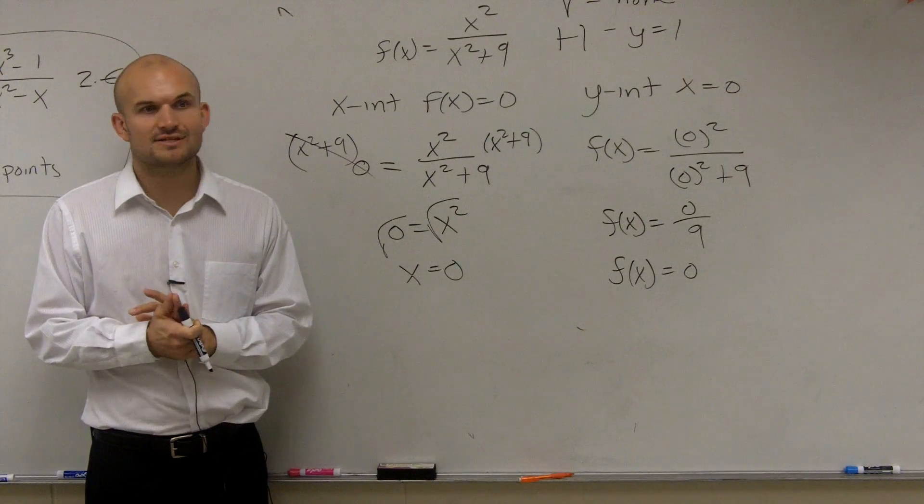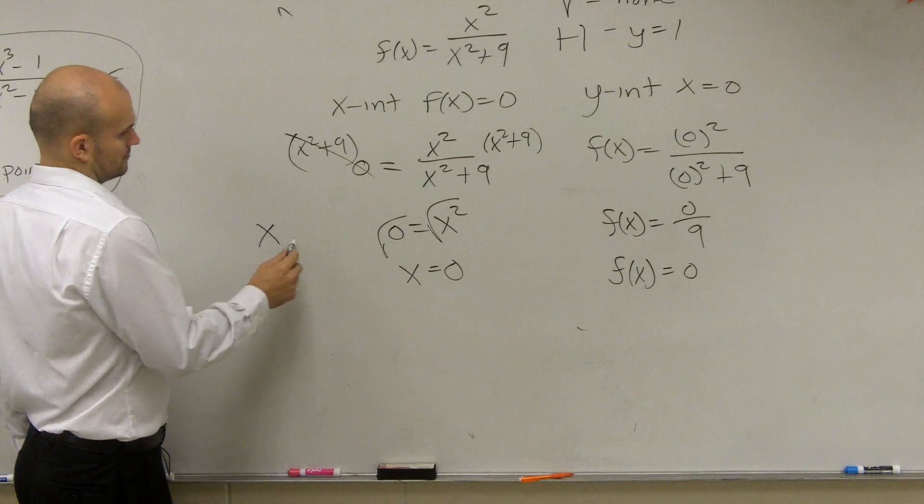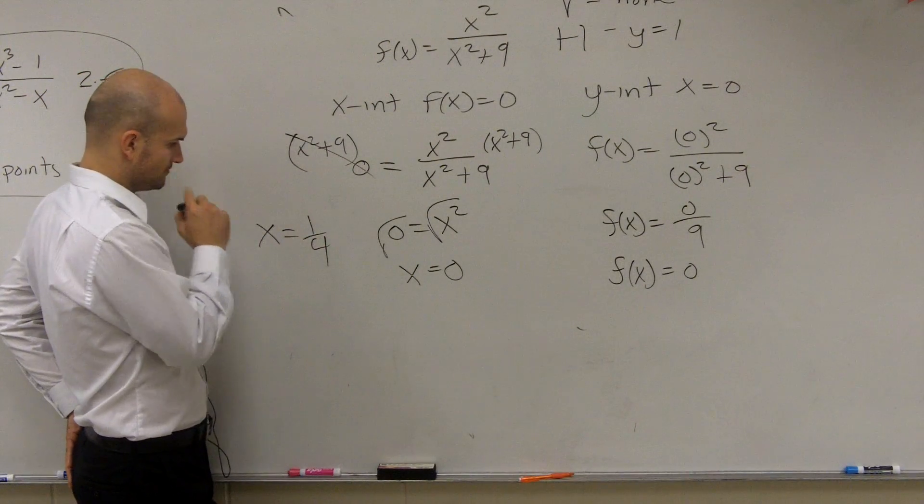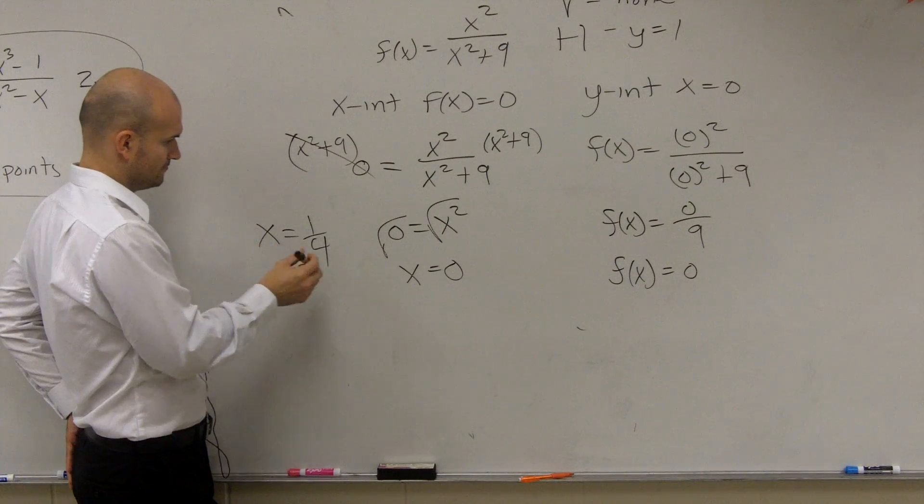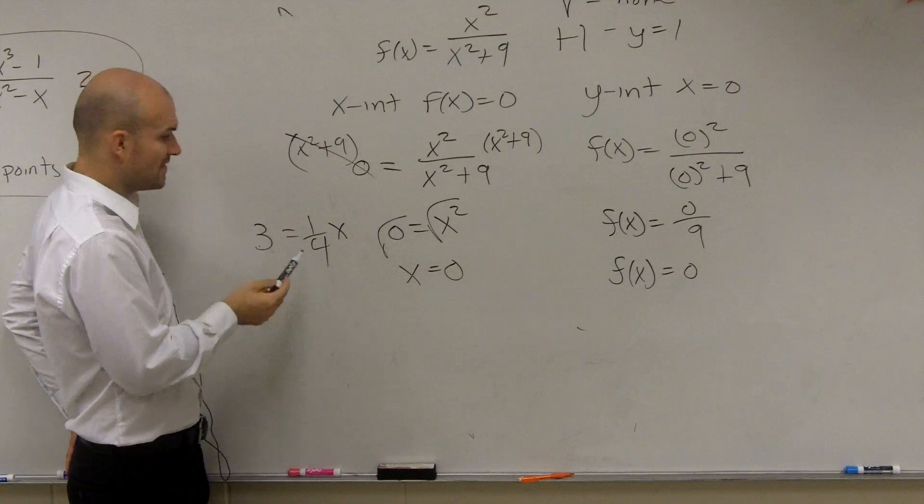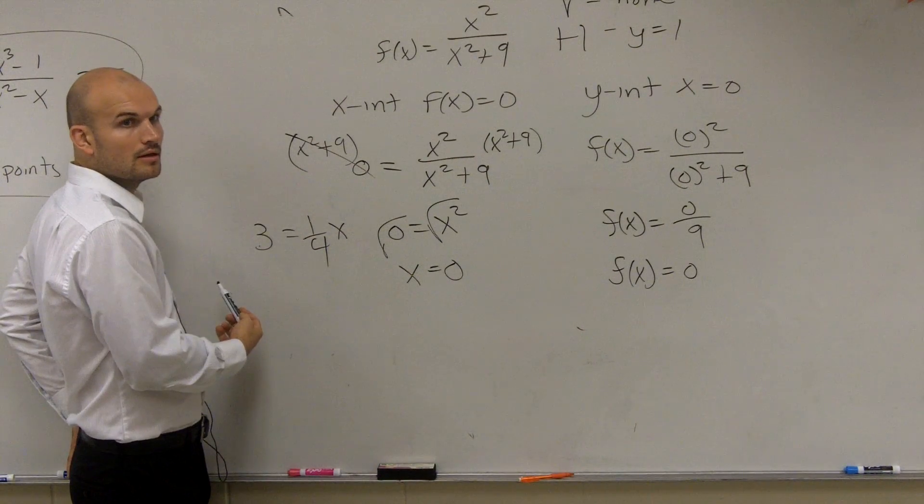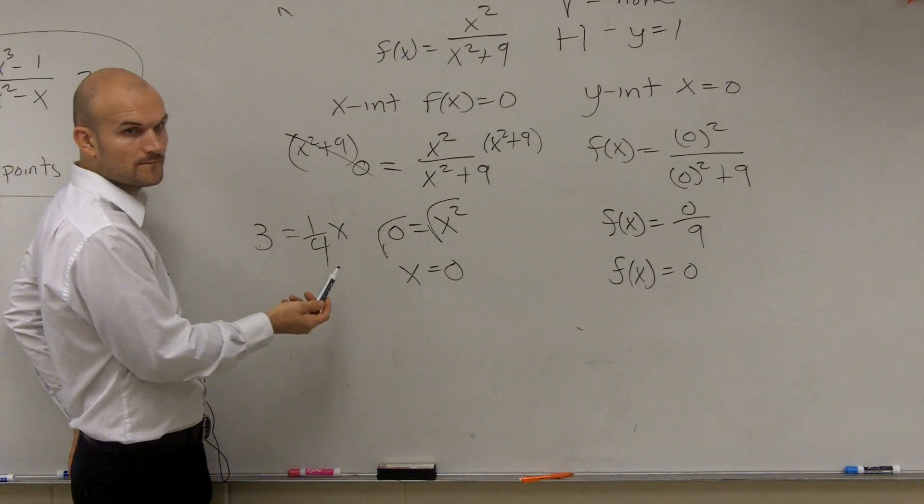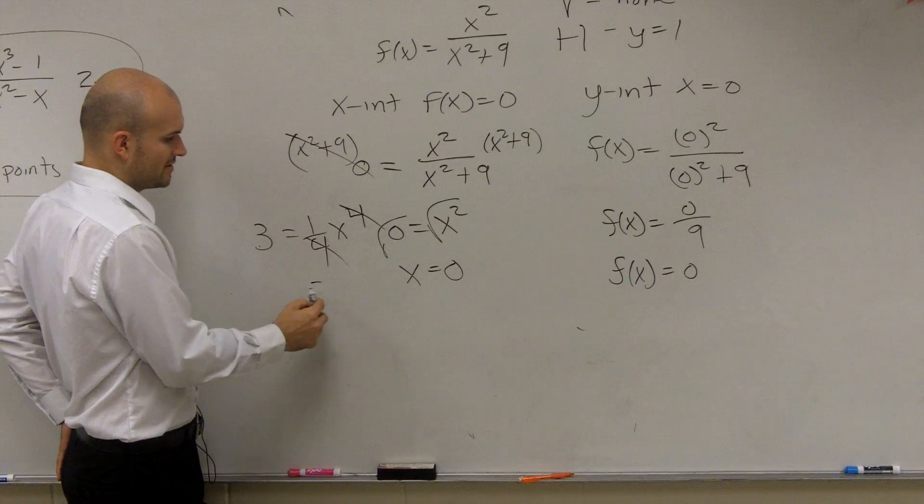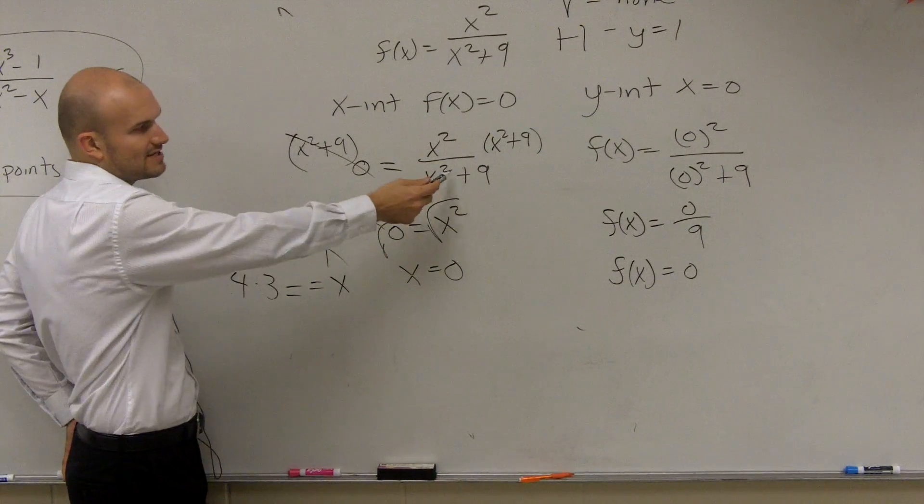Any questions on what I did? Nope. You guys are going to do this for every single problem. So if I said, listen, if I have 3 equals 1 4th x, right, how do I get rid of the 1 4th? You multiply it by what? 4. Because what happens? The 4 divided by 4 gives you 1. And you're just left with x equals 4 times 3, right? Same thing. Whatever's on the denominator, what's x squared plus 9 divided by x squared plus 9?